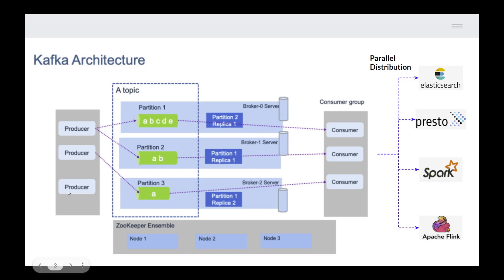In between, we have something called a topic. We create a topic — consider it like creating a folder. Once I create a topic, I can forward data to it. Once I forward the message to the topic, the message will look for the consumer. But it doesn't know which consumer to send to, so it needs some guidance. The topic receives guidance from the zookeeper.